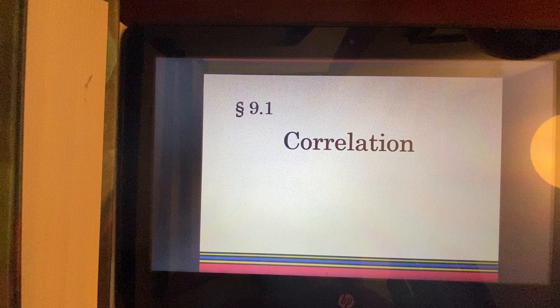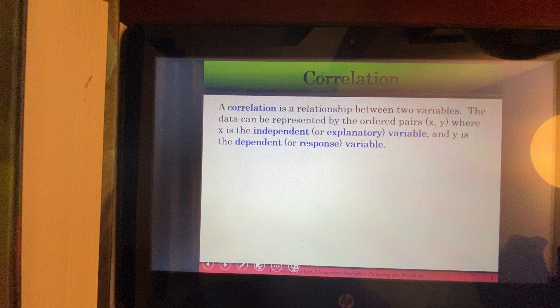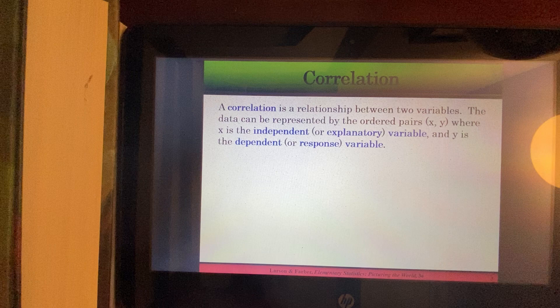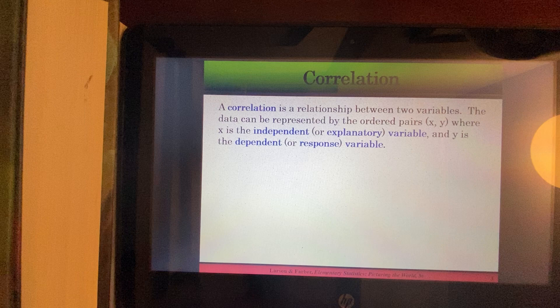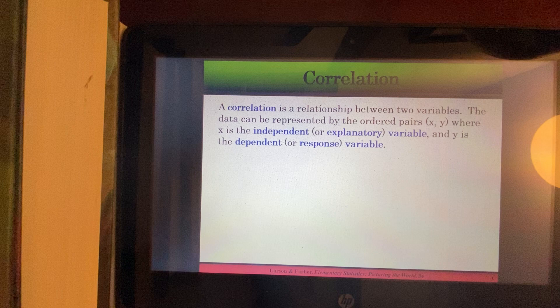It's going to be a condensed version of 9.1. So, correlation is a relationship between two variables. The data can be represented by ordered pairs, which you write the x first and then the y, where your x is the independent variable and y is the dependent variable.